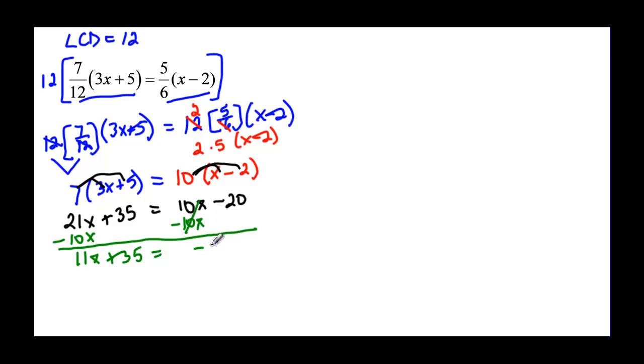Subtract our constant, do that addition property before we start dividing things. So I still have my 11x, this is 0, and this is going to be a negative 55. And now we are ready to divide off the coefficient, and that tells me that x should be equal to negative 5.